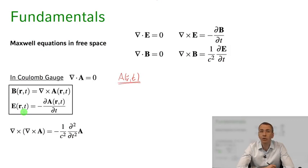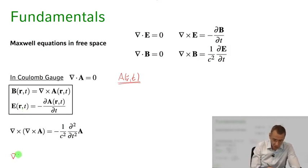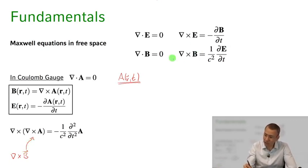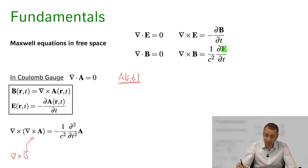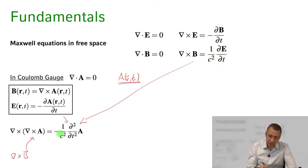What dynamical equations govern the evolution of this vector potential A(r, t)? Let's calculate curl of B. B is just curl of A. From Maxwell's equations, curl of B equals 1 over c squared dE/dt, and dE/dt equals minus d²A/dt². So putting these together, the right-hand side becomes minus 1 over c squared d²A/dt².